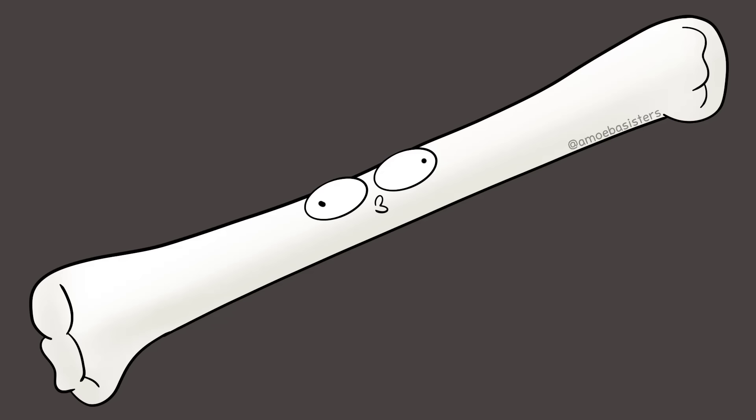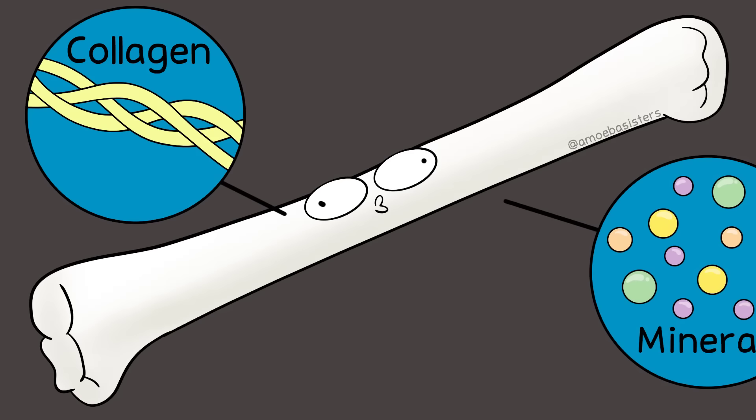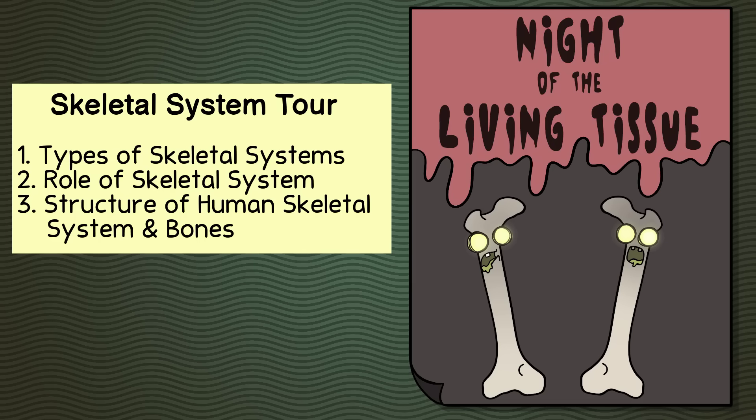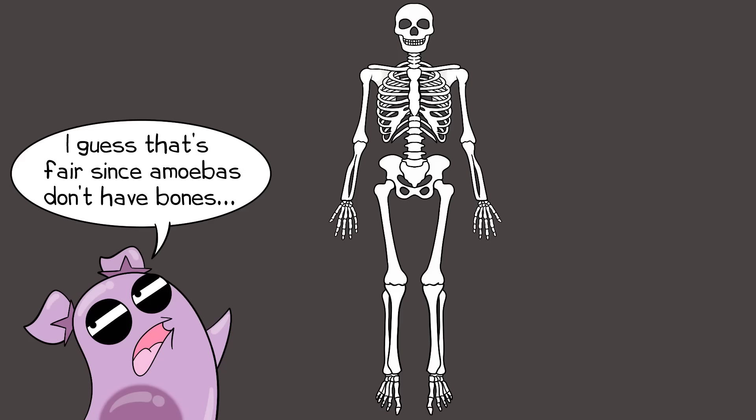If you first think of the skeletal system, you might think of a lot of bones with a lot of names to memorize. That's fair. You might know bones consist of a protein known as collagen as well as many minerals. But one thing that many don't realize is that bones are a living tissue, and there are so many things going on in bones. No bones about it, this video is going to be interesting.